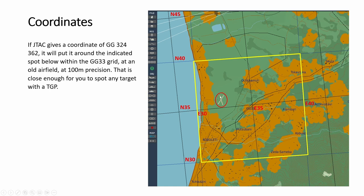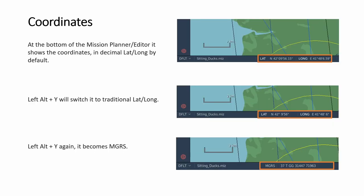So it's talking about this feature here — this gives you an idea. You can see the feature's coordinates in lat-long in degrees and minutes. Then pressing Alt+Y toggles it to MGRS, and pressing it again goes back. So sometimes you need to know how to change between them.